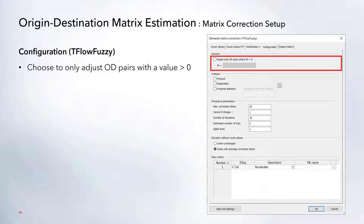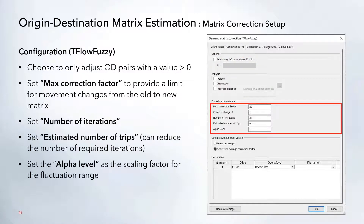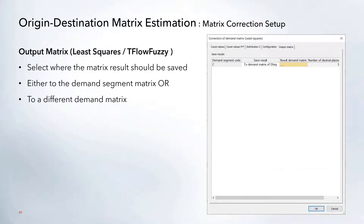For T-flow fuzzy you can also choose which OD pairs to adjust, and there are additional procedure parameters: a max correction factor that limits the change between the old and new matrix, a maximum number of iterations, and an alpha level which is a scaling factor used in conjunction with that fluctuation range. Finally, on the output matrix tab, the result matrix is saved by default to the demand matrix associated with that demand segment. You can change this drop-down to save results in a separate matrix if you want to preserve the original.